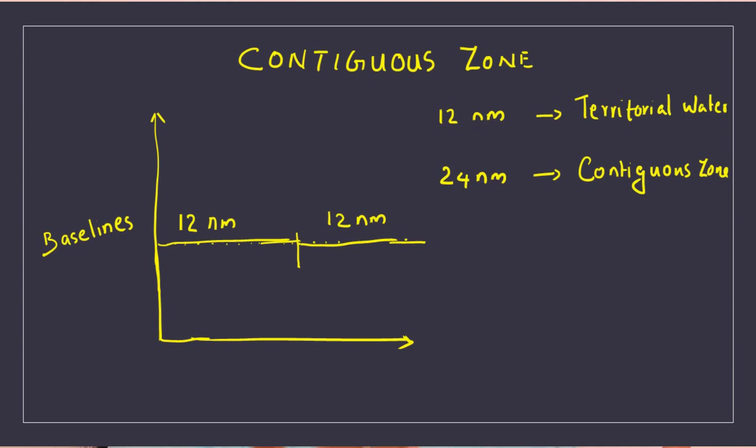What is the Contiguous Zone? The definition of the Contiguous Zone is the zone which extends seaward up to 24 nautical miles from its baseline.